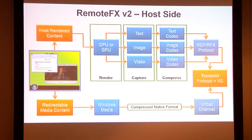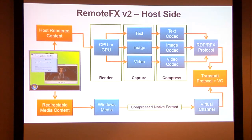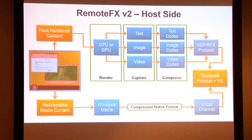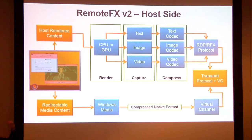Looking at Remote Effects version 2, it differentiates between three different graphics formats: text, still image, and animation or video. I did some color coding here — blue is text, red is still image, and green is video or animation. Those three different formats are treated separately through three different pipelines. In the end, they're brought into the RDP protocol and transmitted to the client. There is one exception: you can redirect video, and it depends on network conditions whether video is redirected or not — it doesn't always work as expected, as you'll see later in our videos.